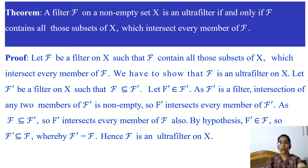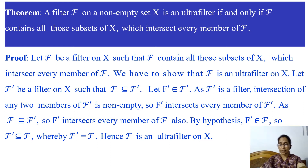Now we have a very important theorem which states that a filter F on a non-empty set X is an ultrafilter if and only if F contains all those subsets of X which intersect every member of F. Let us prove this theorem. Let F be a filter on X such that F contains all those subsets of X which intersect every member of F. We have to prove that F is an ultrafilter on X.